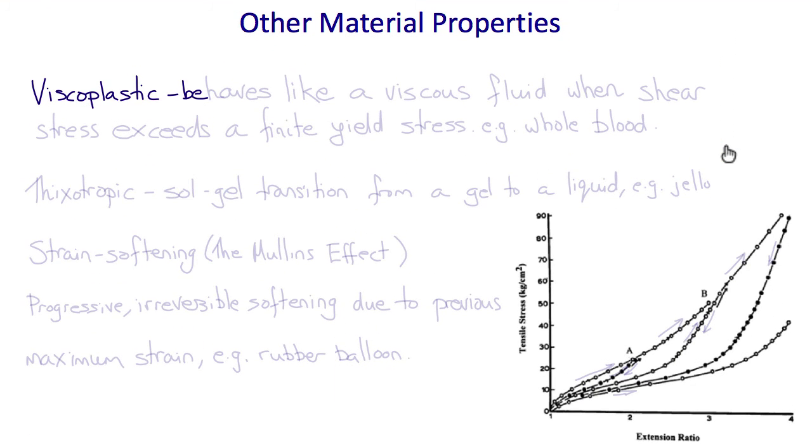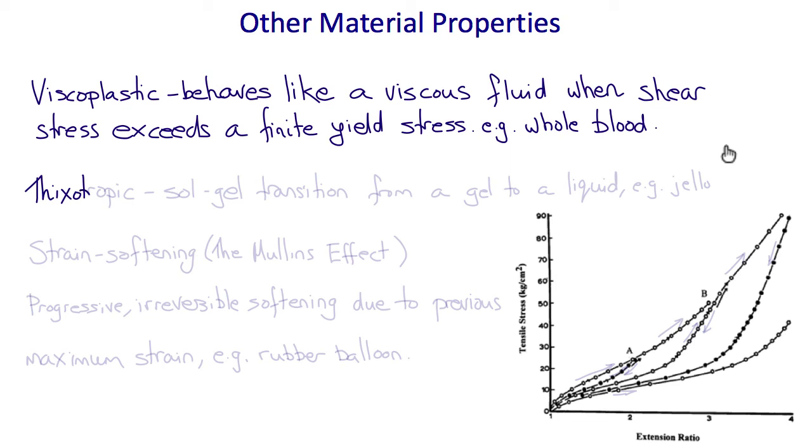There are many other types of material behavior. Viscoplasticity describes the behavior of a material that acts like a viscous fluid, but only after the shear stress exceeds a certain finite yield stress. It takes a certain finite amount of stress before the viscoplastic material starts to flow like a fluid. Below that stress, it's a solid, and actually whole blood is an example of this type of material. A thixotropic material, like the cytoplasm inside cells, undergoes what's called a sol-gel transformation from a gel to a liquid, similar to a jello that's partially set, and then you stir it up and it becomes liquid again.